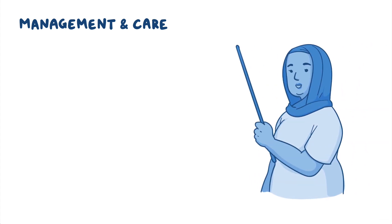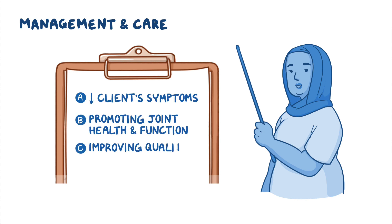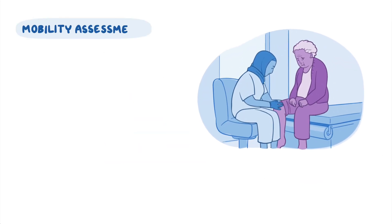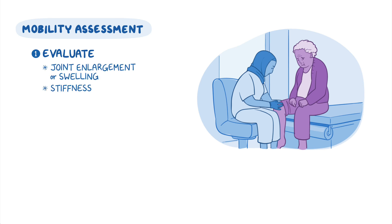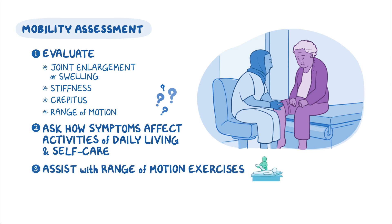All right, let's look at the nursing care you'll provide for a client with osteoarthritis. The priority goals include decreasing your client's symptoms, promoting joint health and function, and improving quality of life. Begin by performing a mobility assessment. Evaluate for joint enlargement or swelling, stiffness, crepitus, and range of motion. Also, ask them how their symptoms affect their activities of daily living and self-care. Then, assist with range of motion exercises as tolerated by your client.